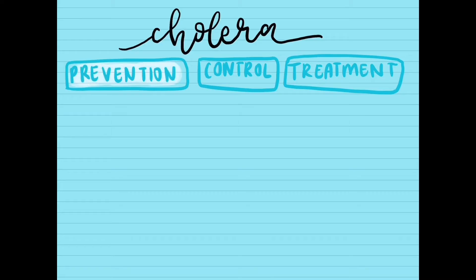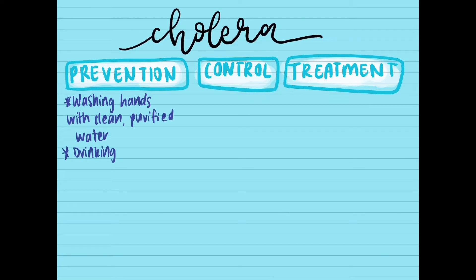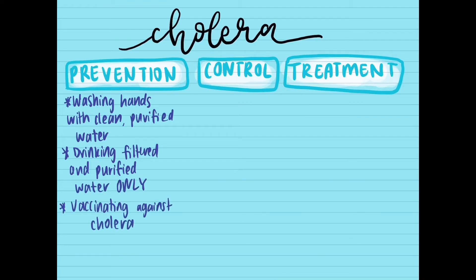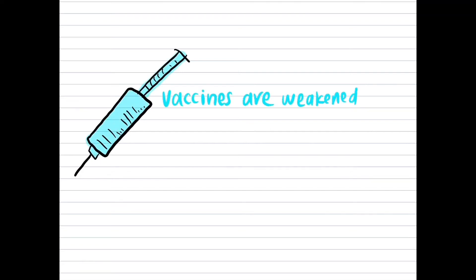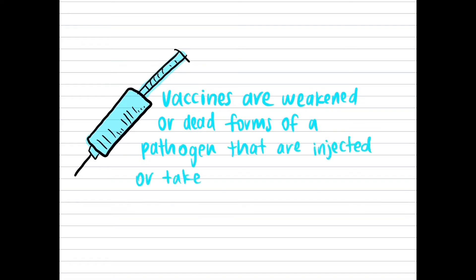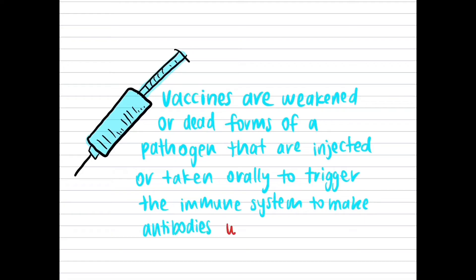Prevention: cholera can be prevented in various ways, including washing hands with clean purified water before eating, drinking purified and filtered water, and vaccinating against cholera. Vaccines are weakened or dead forms of the pathogen introduced to the immune system in order to trigger the third line of defense to develop antibodies and memory cells for a faster response during secondary exposure.